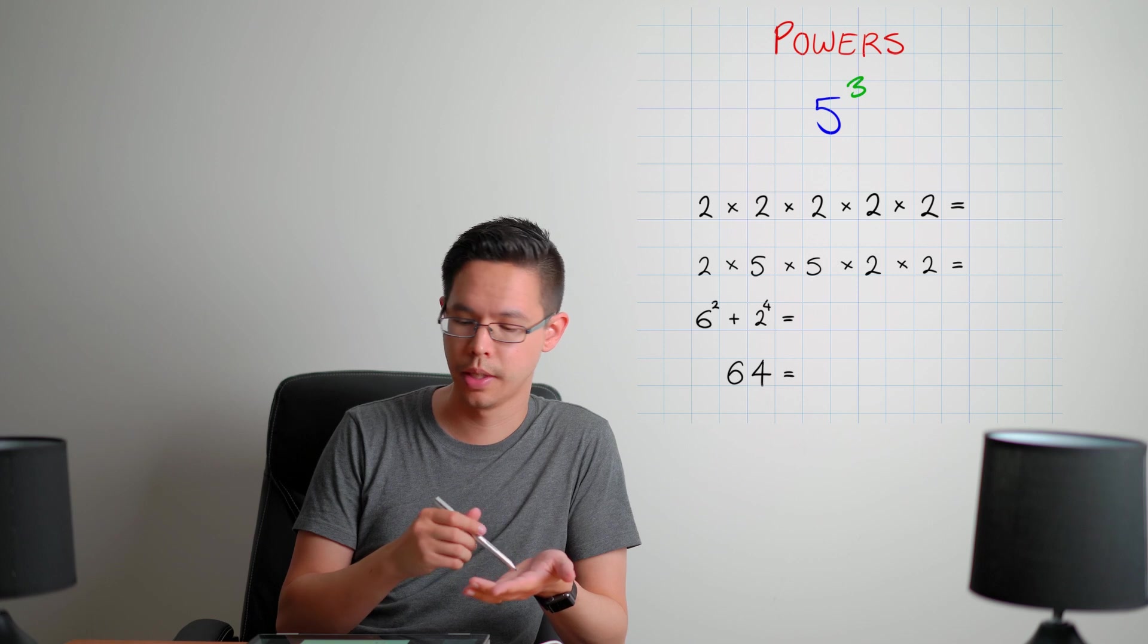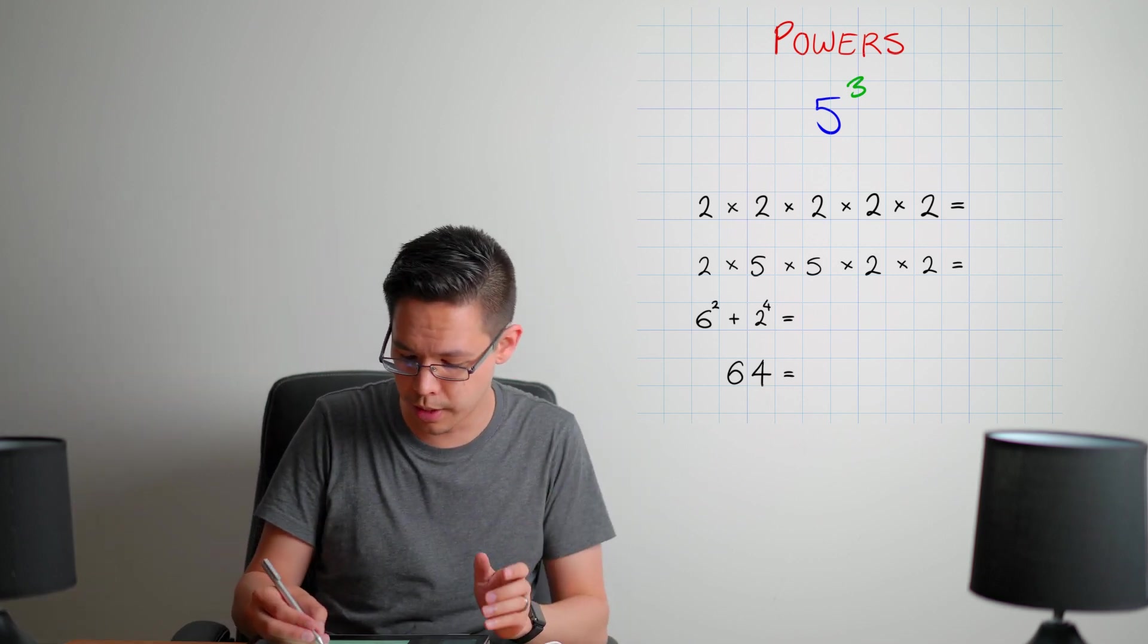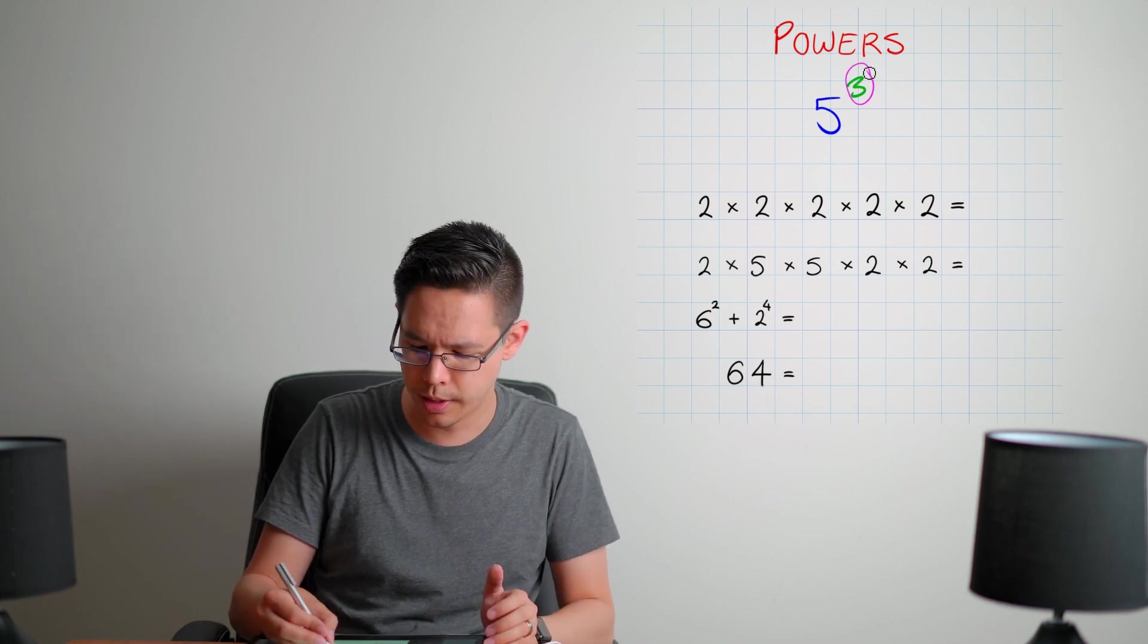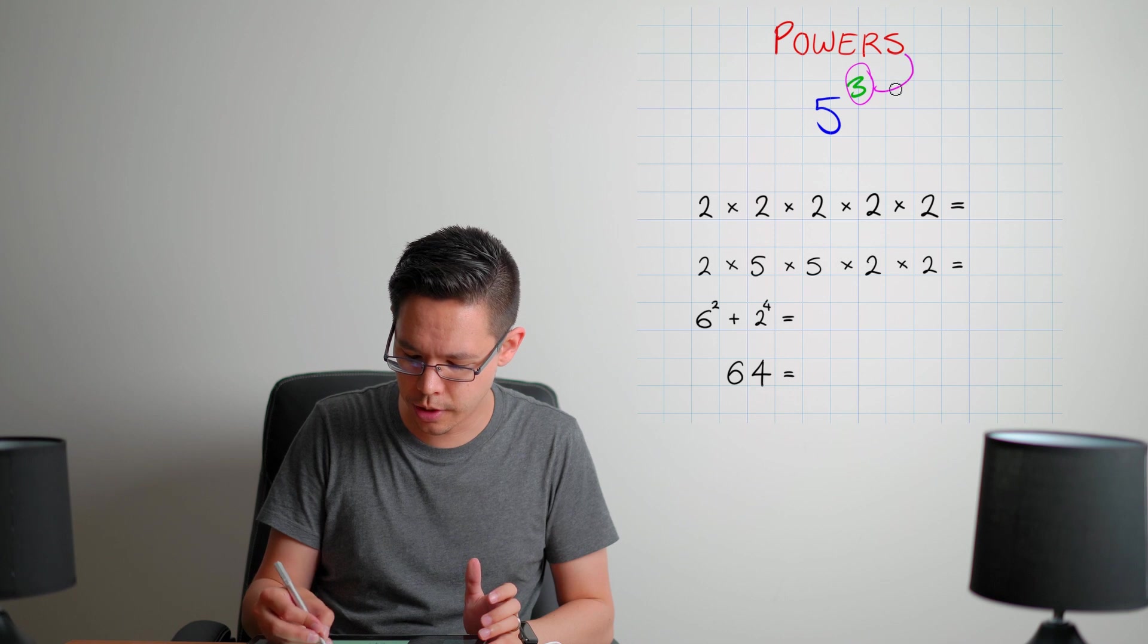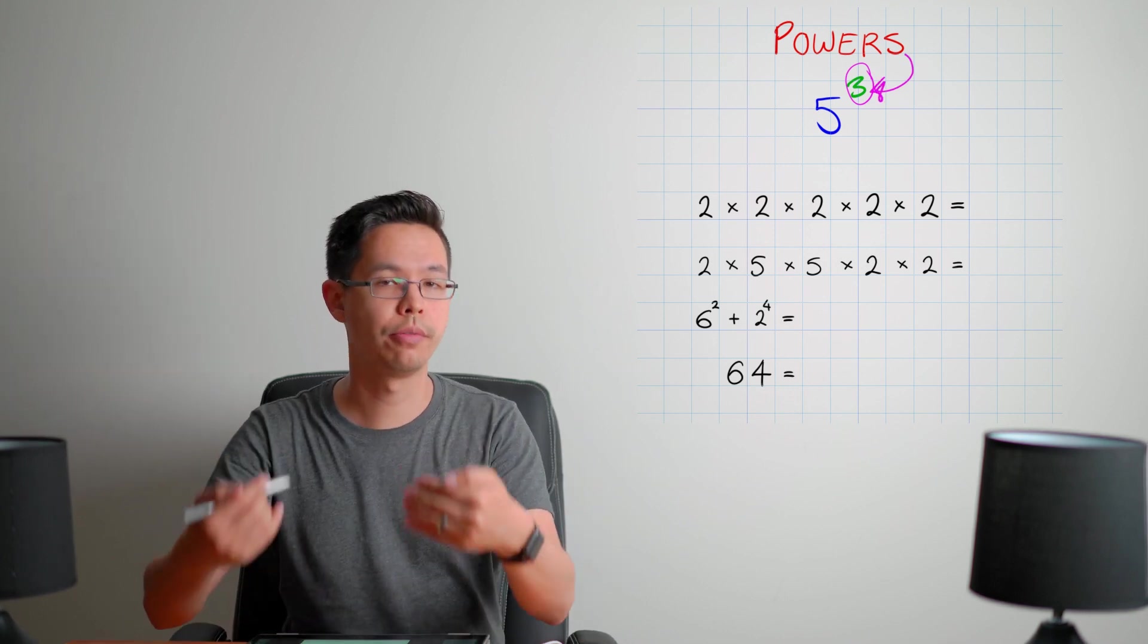Powers, exponents, index, or order - it's all really pretty much the same thing. That's what we're referring to. And it looks like this. So you can see that the number five and there's a little three. That three is drawn up kind of in the upper corner of the number. And this is actually the power. So we're saying here that five to the power of three.